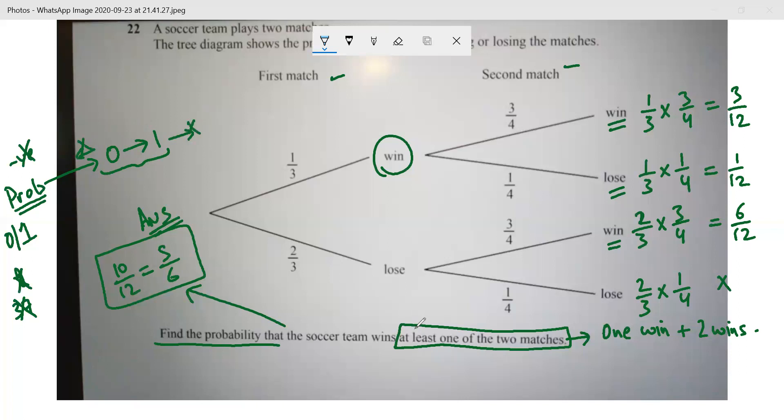The second fundamental thing that you need to understand is what is the meaning of at least one of the two. This implies the best thing is I can win both the matches. The second thing is win-lose, lose-win.